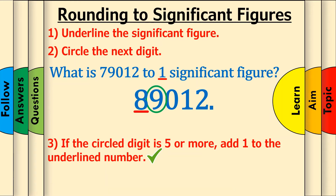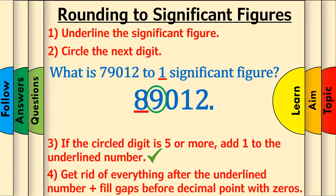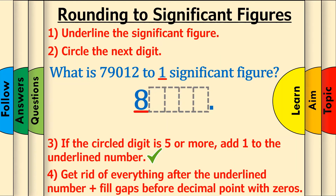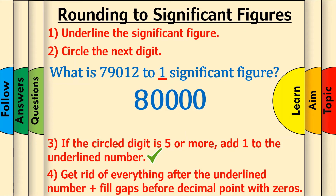Step 4: Get rid of everything after the underlined number. This creates a gap of 4 digits before the decimal point, so fill them with zeros, like this. We're left with the final answer of 80,000.